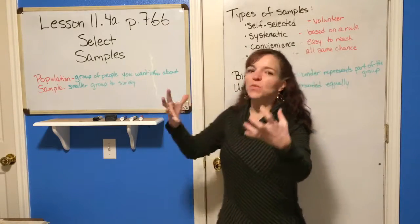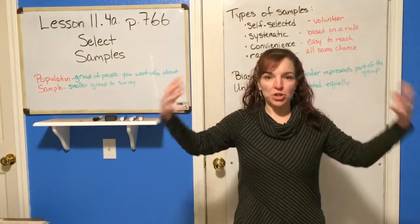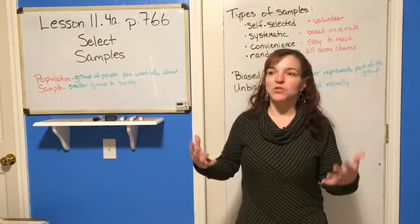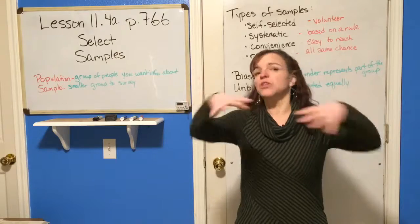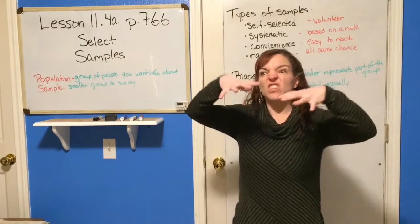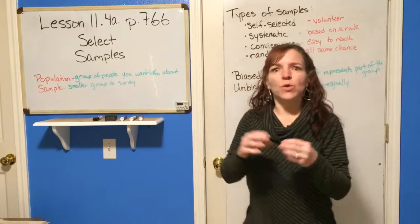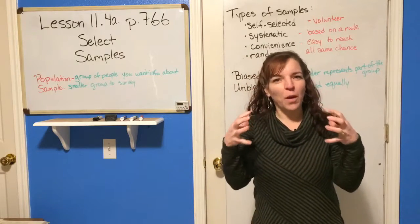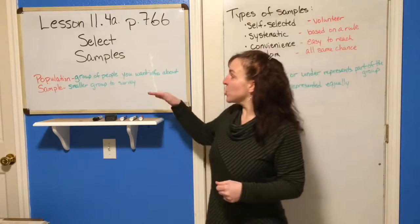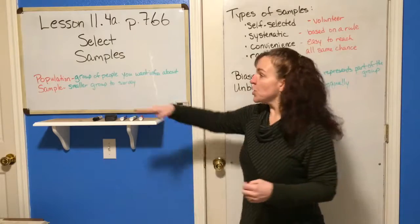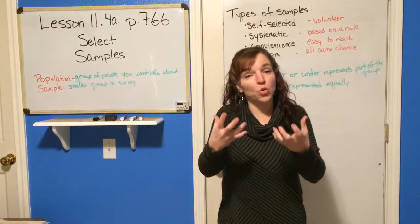When we're gathering statistics, the population is just a group of people that you want information about. If you want information about colleges, you may talk to college professors or college students. So the population is the whole group of people that you want information about. It's a little cumbersome to think that you could ask everyone in that population the questions you need. So when you're taking a survey, you tend to get a sample, which is a smaller group of people within that population that you're going to survey.